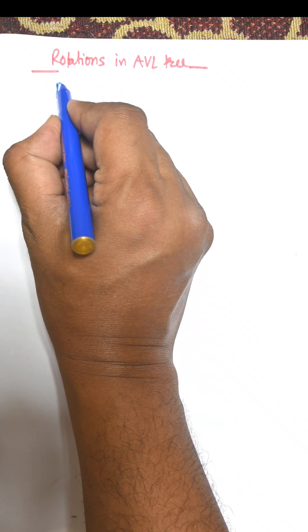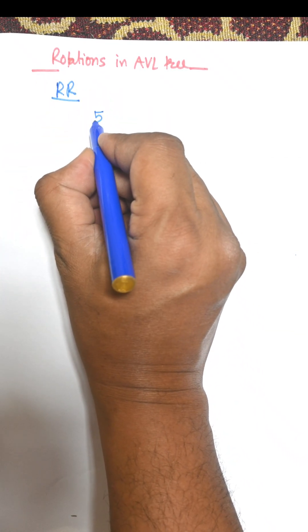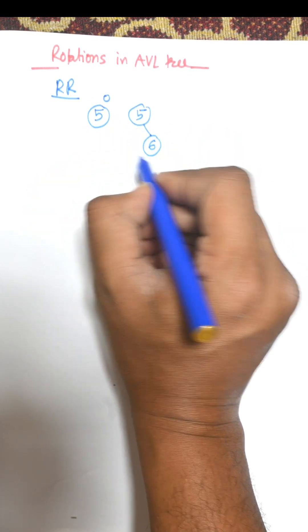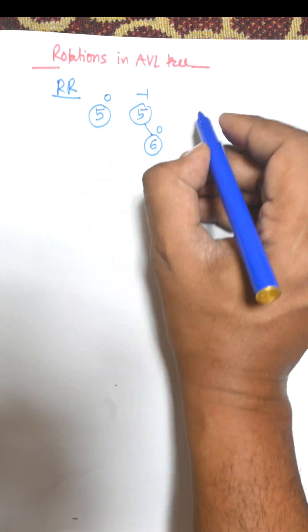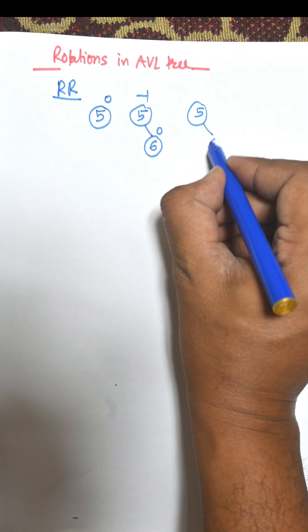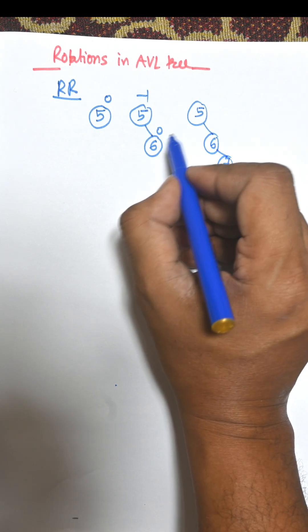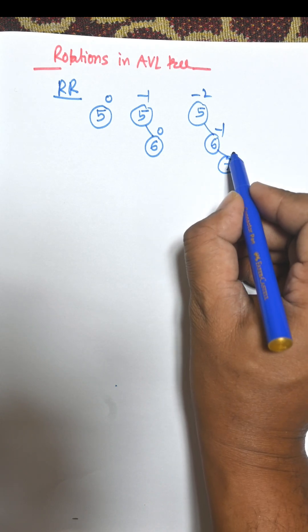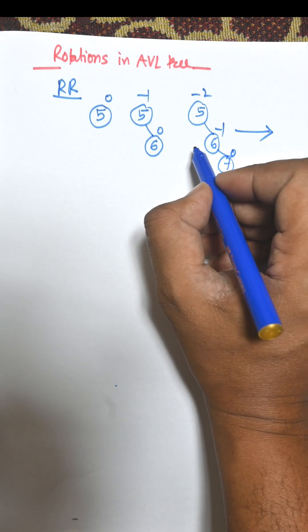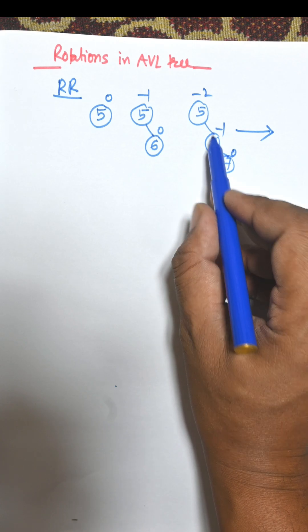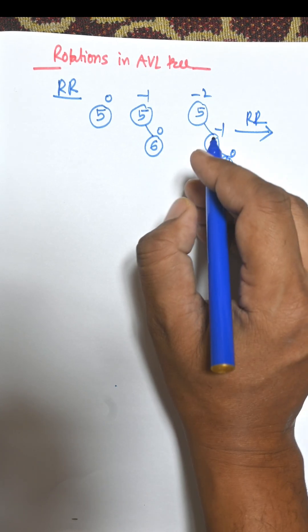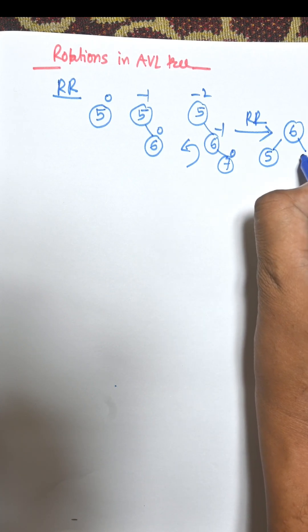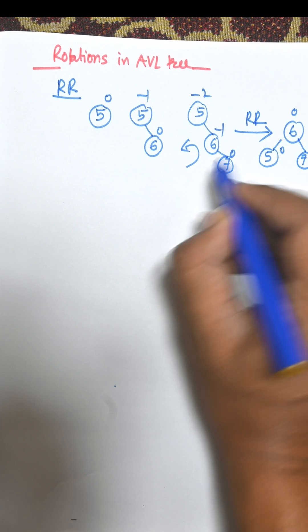First one is RR rotation, that is Right-Right. Suppose initially 5 is the node, balancing factor is 0. Then suppose 6 is inserted on the right hand side of 5, that is 0 minus 1, and this is also an AVL tree. Now suppose 7 is inserted on the right hand side of 6. Now height is minus 2, minus 1, and 0, so it is not an AVL tree. This is a right-right rotation and it is anticlockwise. So 6 will be the root, 5 goes to the left hand side of 6, and 7 goes to the right hand side of 6. Now 0, 0, 0 — so this is an AVL tree.